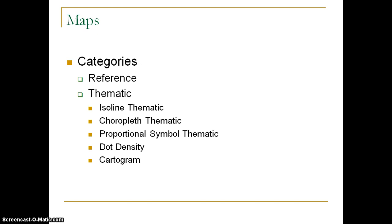The first one you're probably most familiar with. We have a reference map, and we have several different types of thematic maps. The main difference is that the reference map is used to show where places are — maybe how you get from one place to another, like a road map. Thematic maps are used to show what's going on in a particular place, and this is where human geographers spend most of their time.